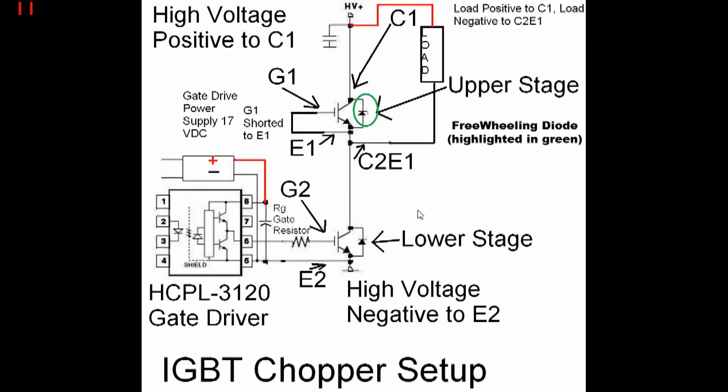In the diagram of the IGBT chopper, I have the freewheeling diode here, highlighted in green. You'll notice that it is on the upper stage of an IGBT that's actually shorted out, so the IGBT in this setup is actually not doing anything. We're just using this diode. And you'll notice it's anti-parallel with the load.